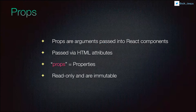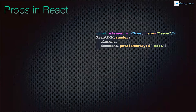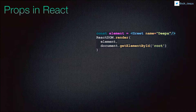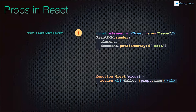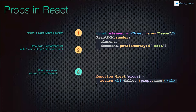Moving on to props — what are props? Props are properties passed into React components via HTML attributes. They are immutable and read-only. For example, you have an element in index.js and a Greet component. The render method calls the element, React calls the Greet component with the name 'Deepa', the component returns an H1 tag with the result, and finally ReactDOM.render updates the DOM displaying 'Hello Deepa' in the UI.